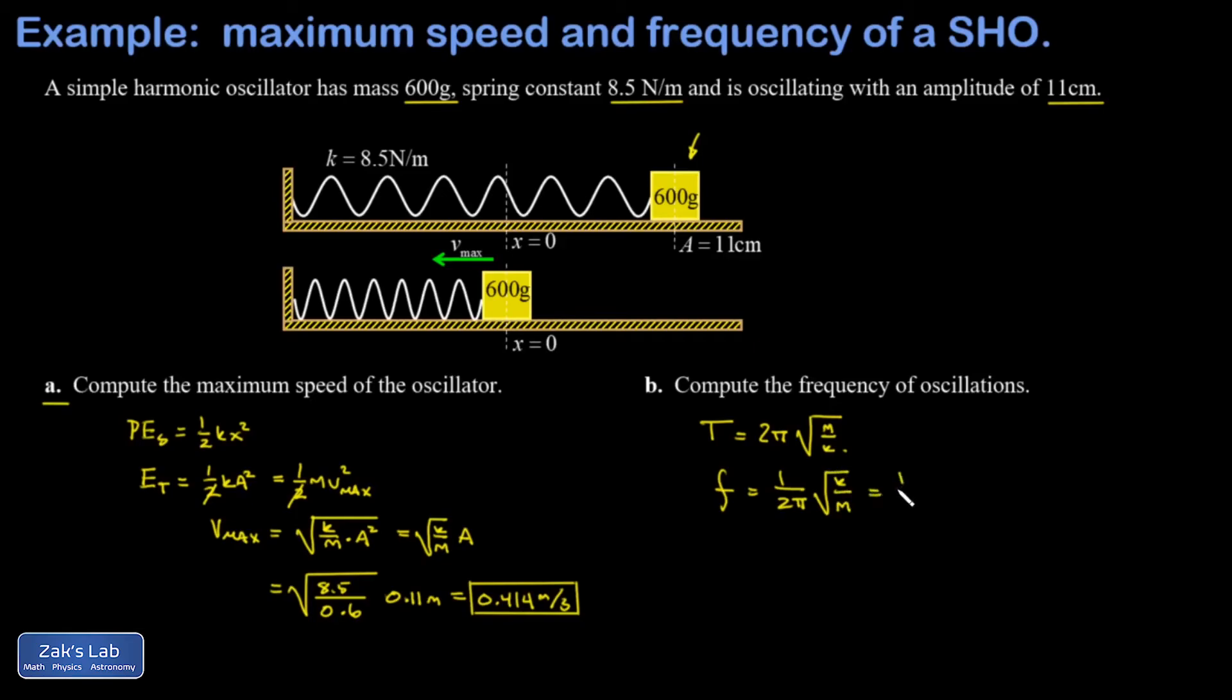All I have to do is plug in. Again the mass has to be converted to kilograms so I have 1 over 2π square root 8.5 over 0.6. Into three significant digits I get 0.599 and the units of frequency are hertz. A hertz is an oscillation per second and that means this thing is oscillating less than once per second.